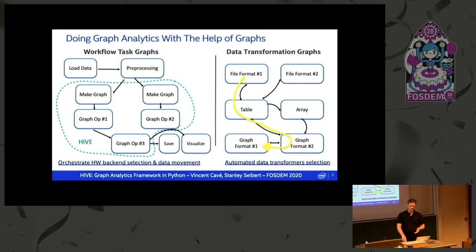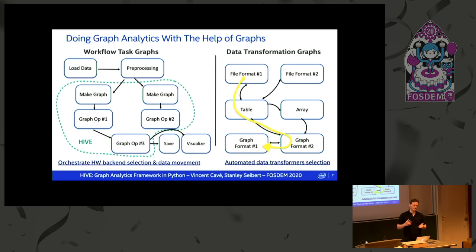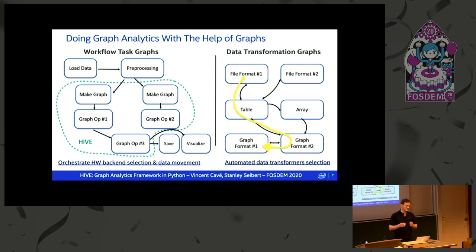Another cool thing is data transformation transitivity. Just by transitivity, you might actually support some conversions you haven't explicitly provisioned for — for instance, starting from a file format, knowing how to make it a table, and knowing how to convert that into a graph format. It would probably run slowly, but what's pretty cool is you can think about building performance monitoring infrastructure. You could look at this graph and figure out that you keep doing a path that is very long and expensive. The system could tell you: if you implement a direct conversion from that file format to that graph format, you'd save time. Similarly, for different graph inputs, you could characterize them, see results on CPU vs GPU, and plug all of this into a machine learning framework to learn from it.